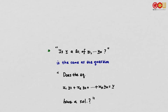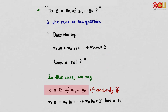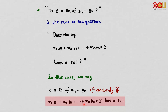We can note that two questions are actually the same: 'Is v a linear combination of u1 to uk?' is equivalent to 'Does the equation x1·u1 + x2·u2 + ... + xk·uk = v have a solution?' So v is a linear combination of u1 to uk if and only if that equation has a solution.